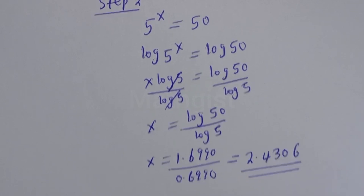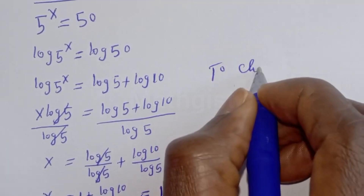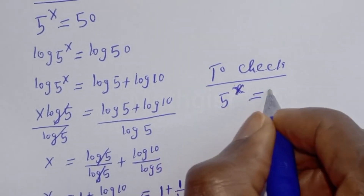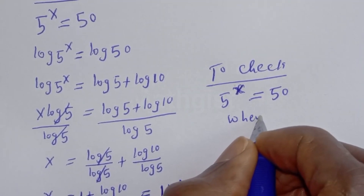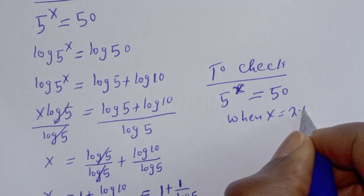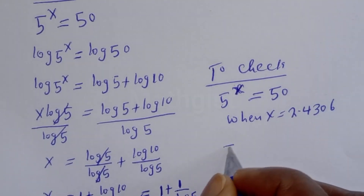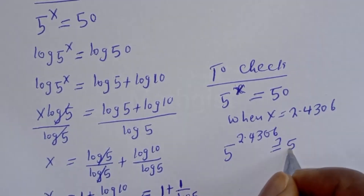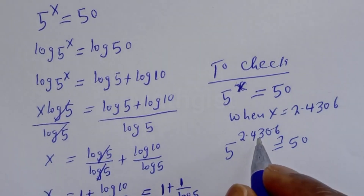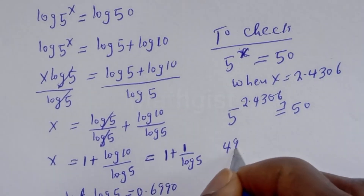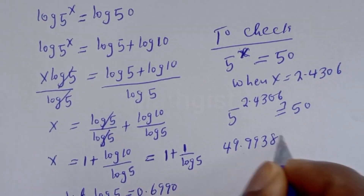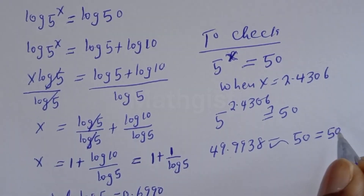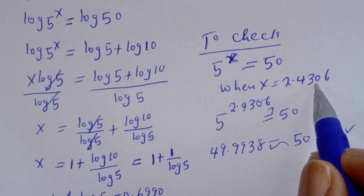Let's check to confirm if our answer is right. Five raised to power s equals 50; when s equals 2.4306, we have 5 raised to power 2.4306, which equals 49.9938, approximately equal to 50. This satisfies the given equation at s equal to 2.4306.